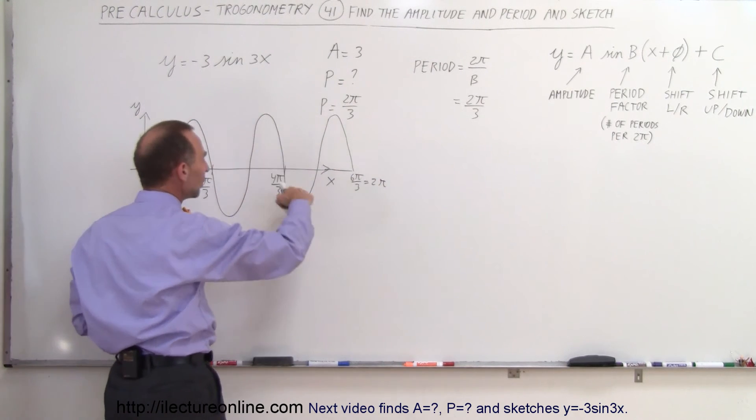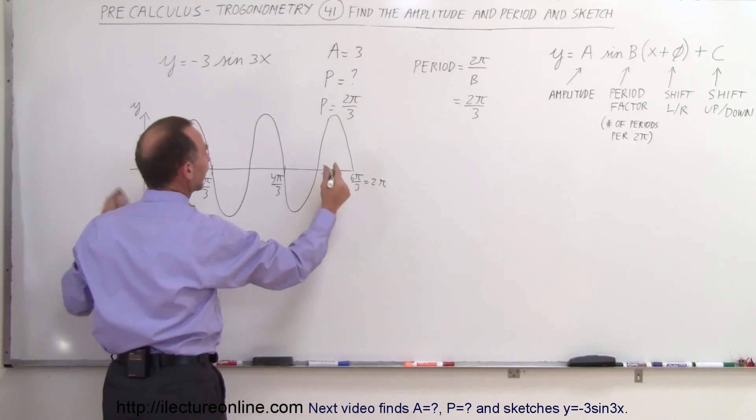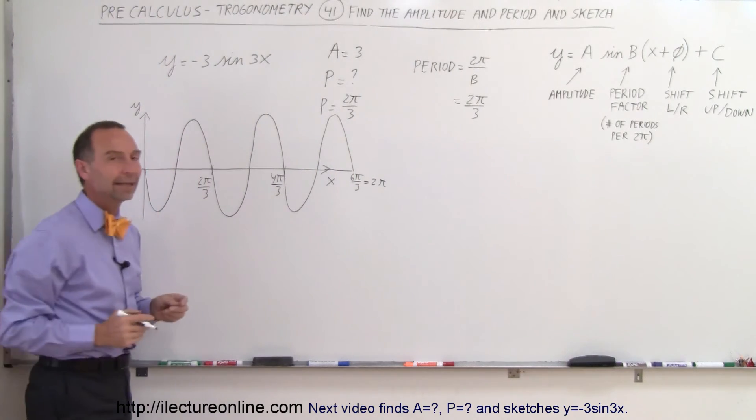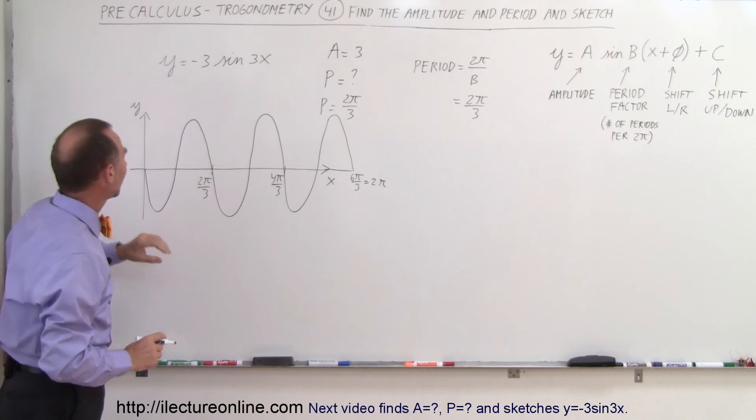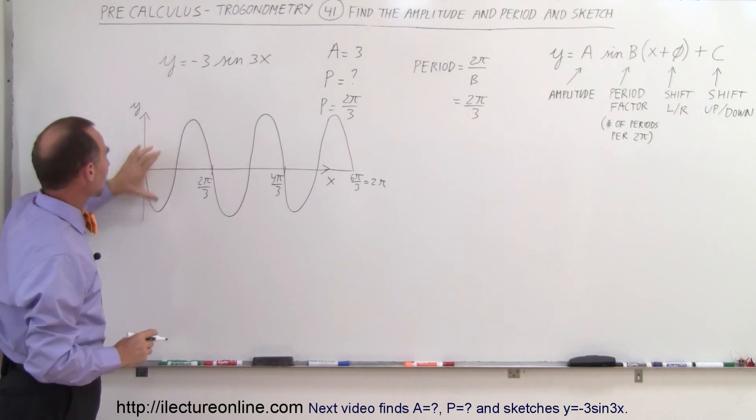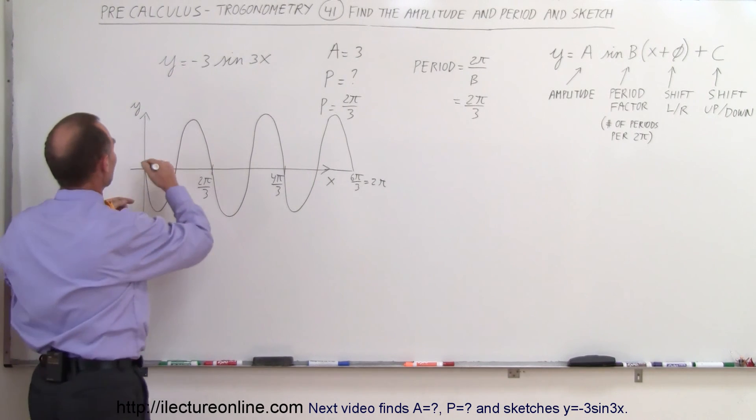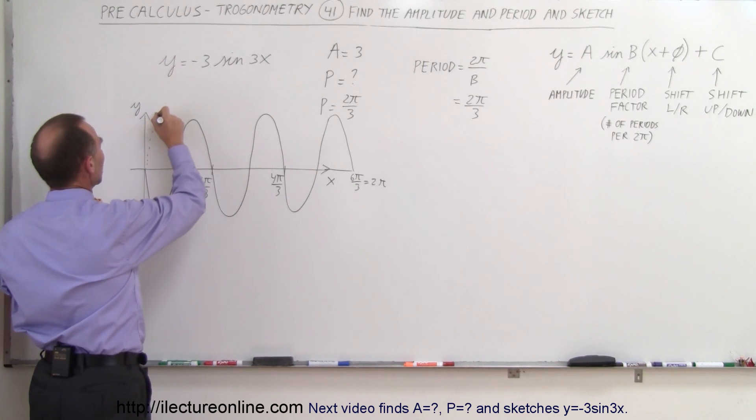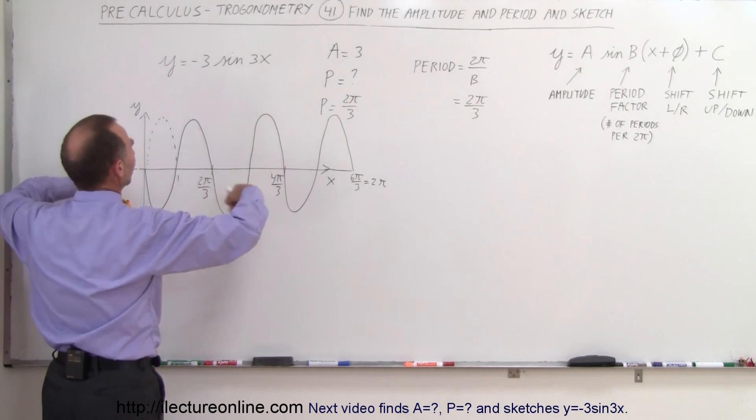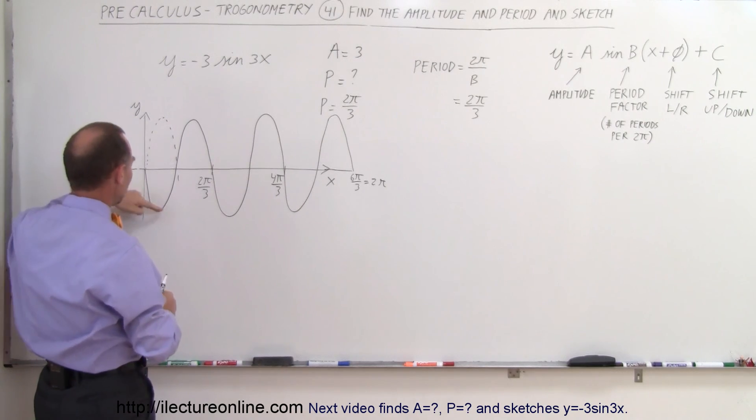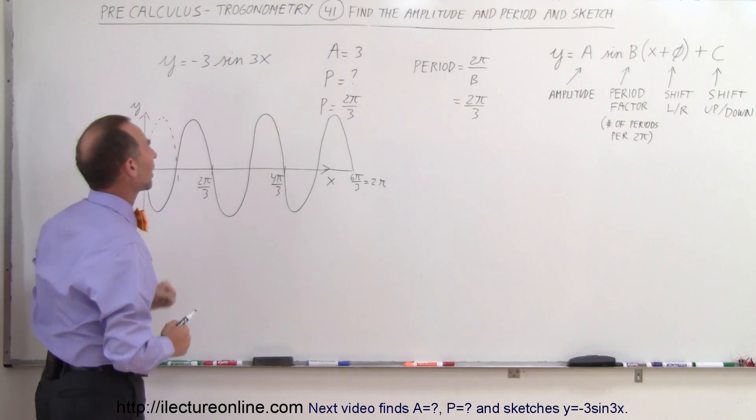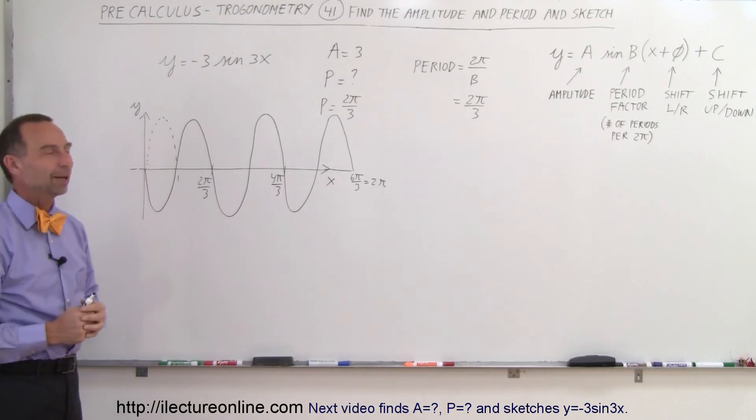So you can see it has 3 complete periods in a 2 pi distance on the x-axis so that's what this 3 signifies. The amplitude 3 is right here and of course the negative means that instead of going upward the sine function normally would be drawn like this but we simply flip the equation around or flip the drawing the sketch around and we start downward instead of upward and that accounts for the negative and that's how we do that.